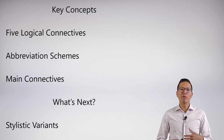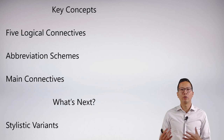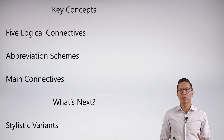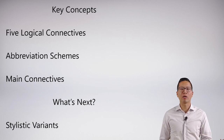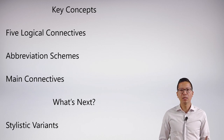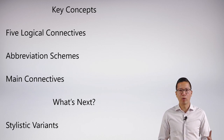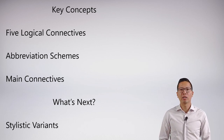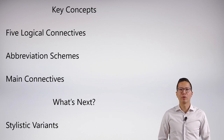So we learned a lot of important things in this first introductory lecture about the logical connectives and their names. We understand what an abbreviation scheme is, and we know that identifying main connectives is really important. But we're rarely going to be symbolizing such straightforward questions — you'll do it for the first five minutes and then move on. What we need to know next is what is called stylistic variance: how people speak in other ways that indicate the same logical connectives we've been studying, and we'll have to learn how to decipher that.